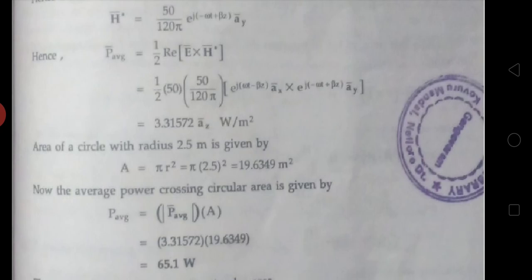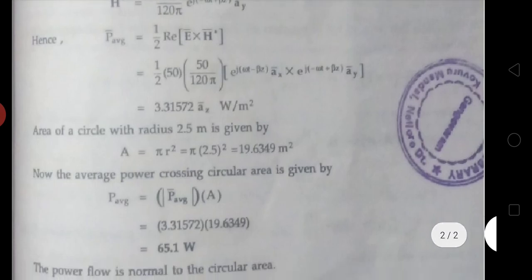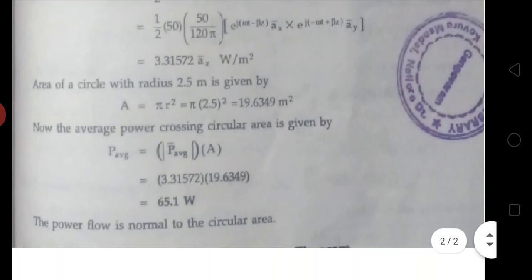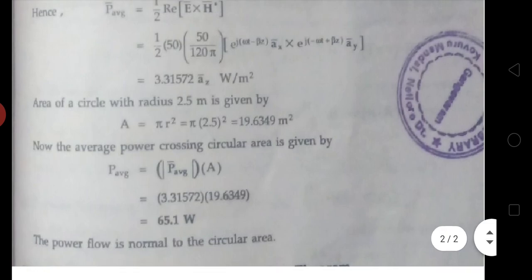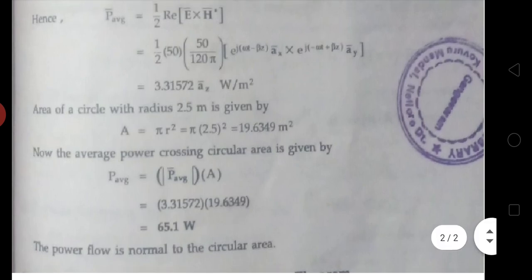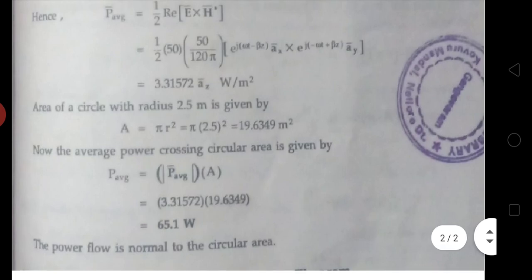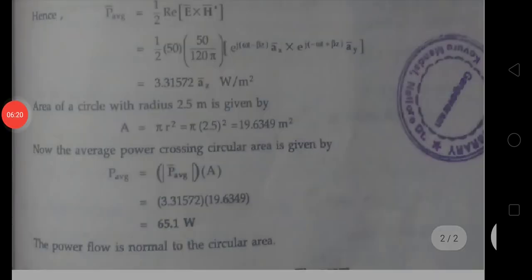The average power density equals to (1/2) Real part of E bar cross H bar conjugate. Substituting E bar and H bar conjugate: (1/2) × 50 × (50 by 125) e^(j(ωt - βz)) ax bar × e^(j(-ωt + βz)) ay bar. The two exponential terms cancel, e^0 equals to 1, and ax bar cross ay bar equals to az bar.